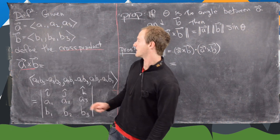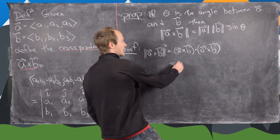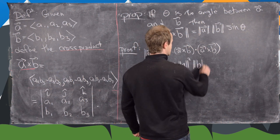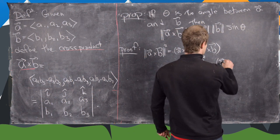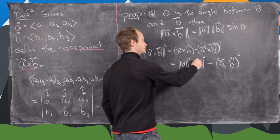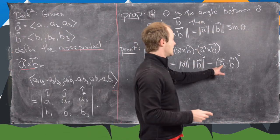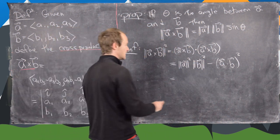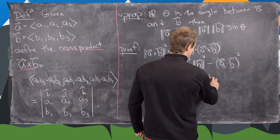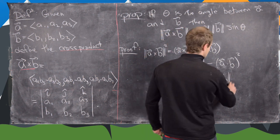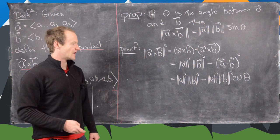We use the following equation, which is straightforward to prove from the definitions of the cross product and dot product by checking all components: |a×b|² equals the magnitude of a squared times the magnitude of b squared minus a dot b squared. We can then apply the formula involving the dot product and cosine of the angle: this gives magnitude of a squared times magnitude of b squared minus magnitude of a squared times magnitude of b squared times cosine squared theta.